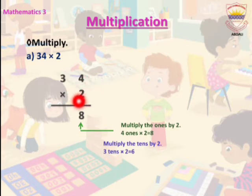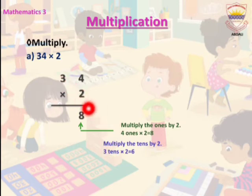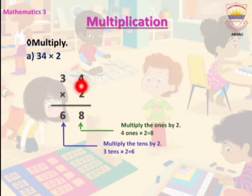Now we multiply 2 by the 10's place. 3 is at the 10's place; 3 multiplied by 2 is 6. We write 6 at the 10's place. When we multiply 2 by 34, we get our product: 68.